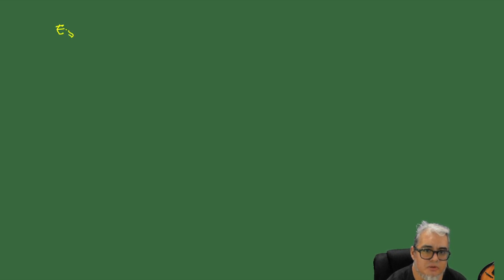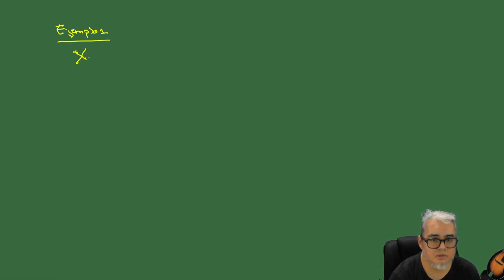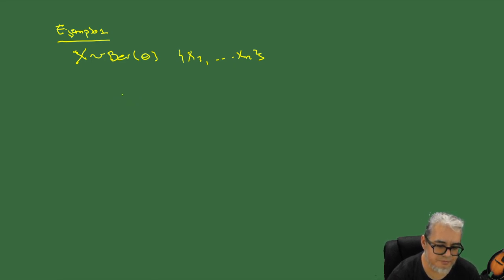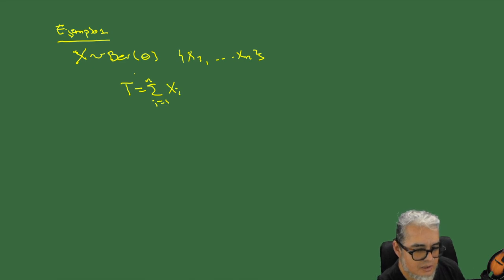Bien, entonces el primer ejemplo de hoy. Vamos a tomar una muestra aleatoria de datos que se distribuyen como una Bernoulli. Tenemos una variable aleatoria X que se distribuye como una Bernoulli con parámetro θ, y una muestra X₁ hasta Xₙ. Ya vimos que la estadística T (la suma de las X's) es suficiente para el parámetro θ de la Bernoulli. Ahora vamos a mostrar que además es minimal, y ya con eso tendríamos que es minimal suficiente.